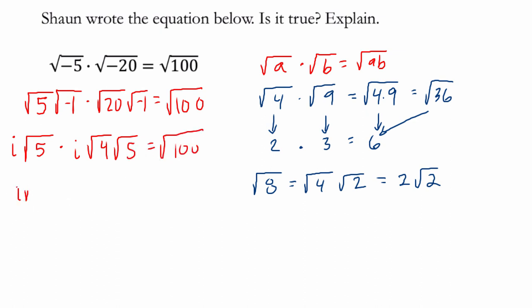So i times the square root of 5 times i times 2 times the square root of 5 equals the square root of 100.